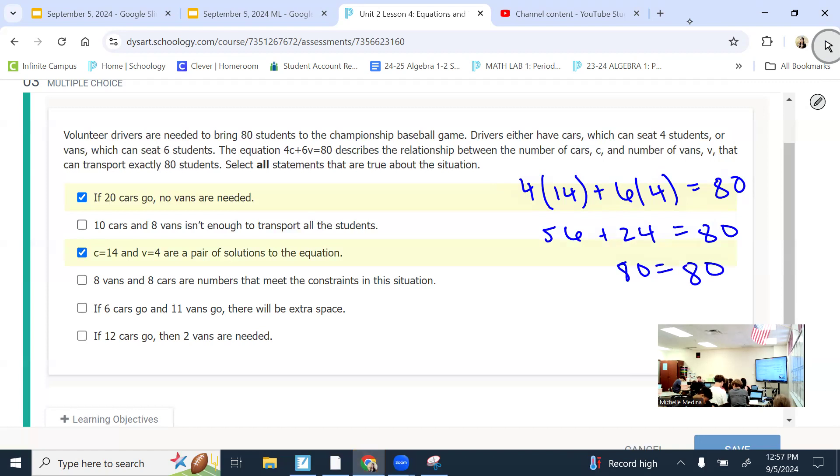8 vans and 8 cars are numbers that meet the constraints. So, we're basically asking if these are solutions. So, 4 times 8 plus 6 times 8. 4 times 8 is 32. 6 times 8 is 48. When I add those, do I get 80? No. So, then let's not pick that one.